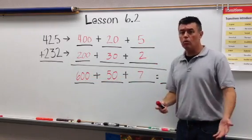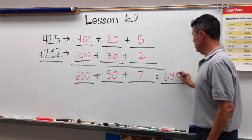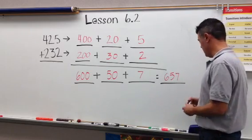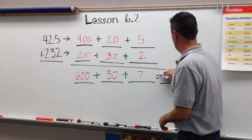600 plus 50 plus 7 equals, and they should be able to put that together as 657. Okay? So if you remember this from last time, when we were doing the two-digit numbers, it shouldn't be a problem.